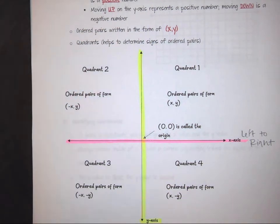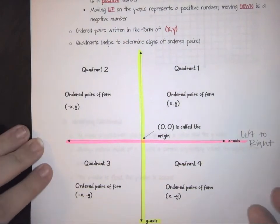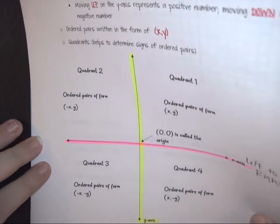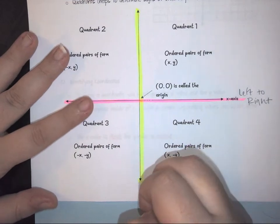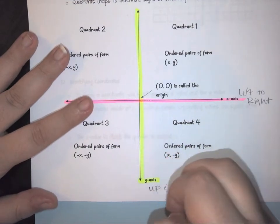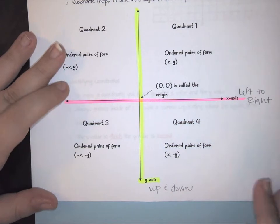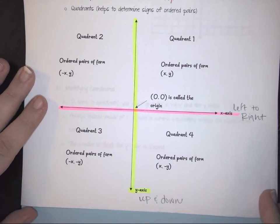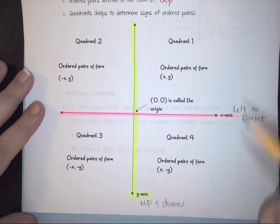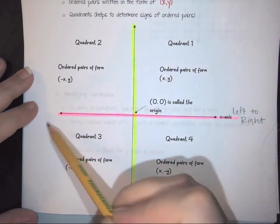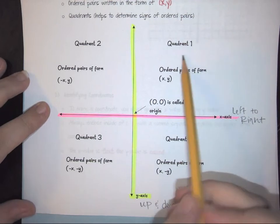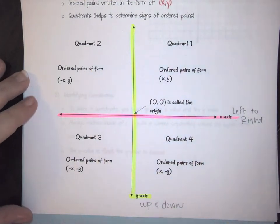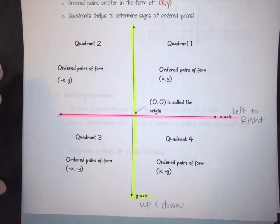We call the vertical axis the y-axis. The y-axis is where we are talking essentially about movements going up and down. Your coordinate plane, if you notice, has broken the page up into four quadrants — one, two, three, and four.